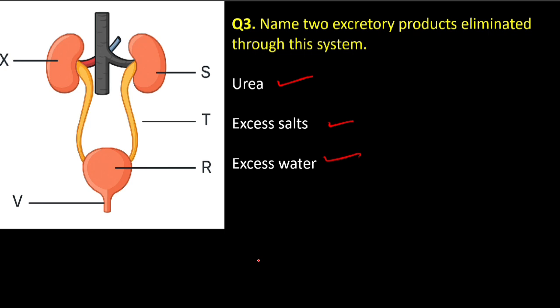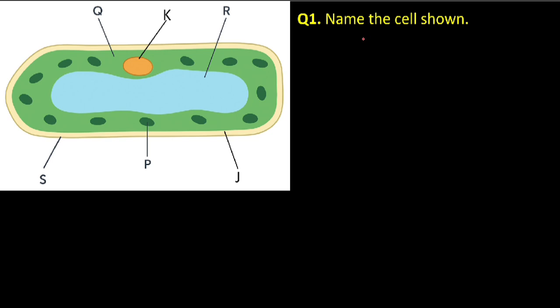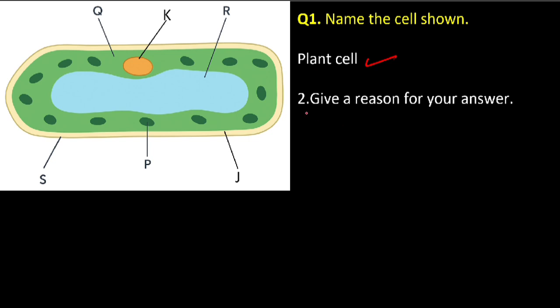Let us go on to our second diagram — here we have about cells. The first question is asking: name the cell shown. This is a plant cell. Give a reason for your answer — plant cells have a cell wall. You can see here we have two walls: the outer wall is called the cell wall, and the inner wall we call the cell membrane. When you see a cell wall, then it is a plant cell.